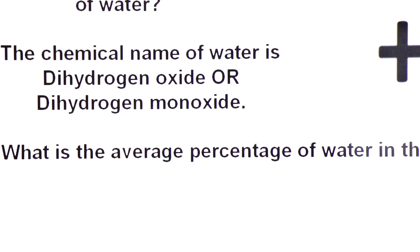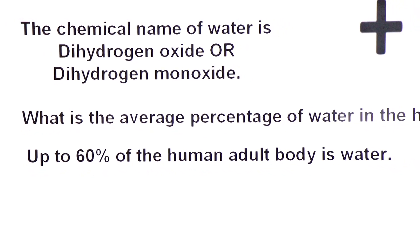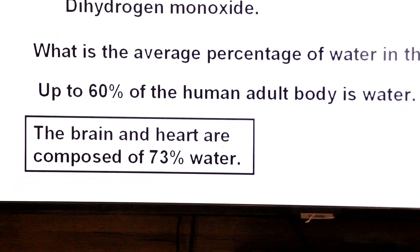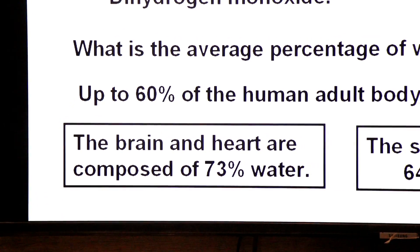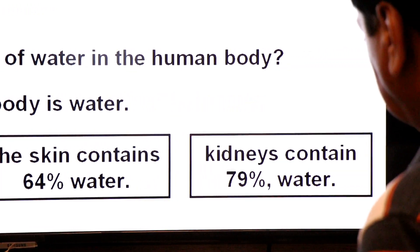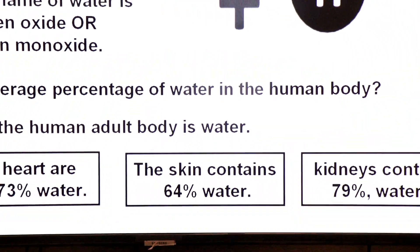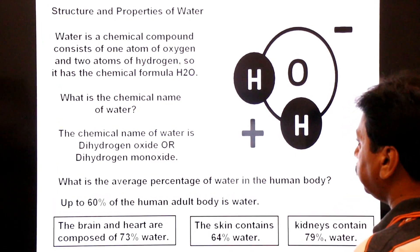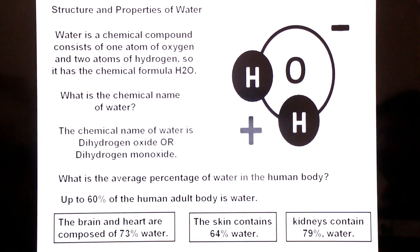What is the average percentage of water in human body? Up to 60 percent of human adult body is water. Let's take a few examples: the brain and heart are composed of 73 percent water, the skin contains 64 percent water, kidneys contain 79 percent water, and bones contain 31 percent water.